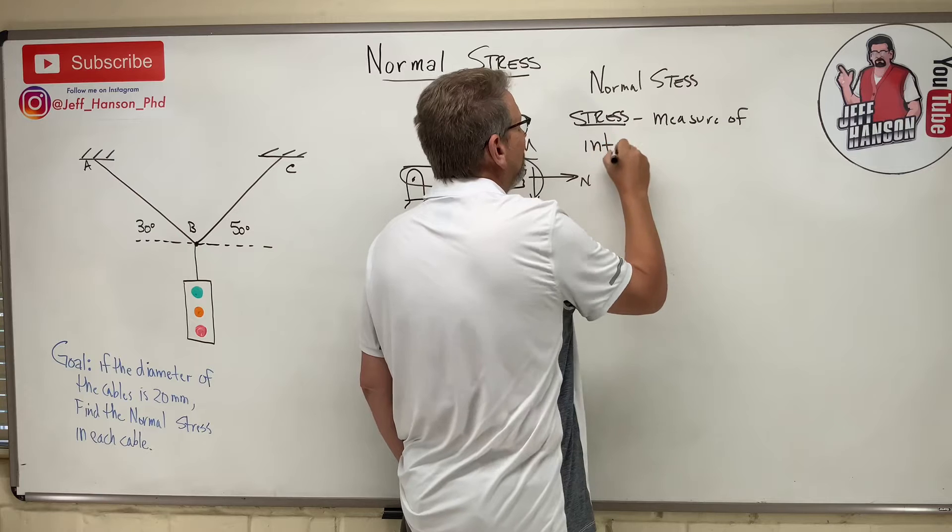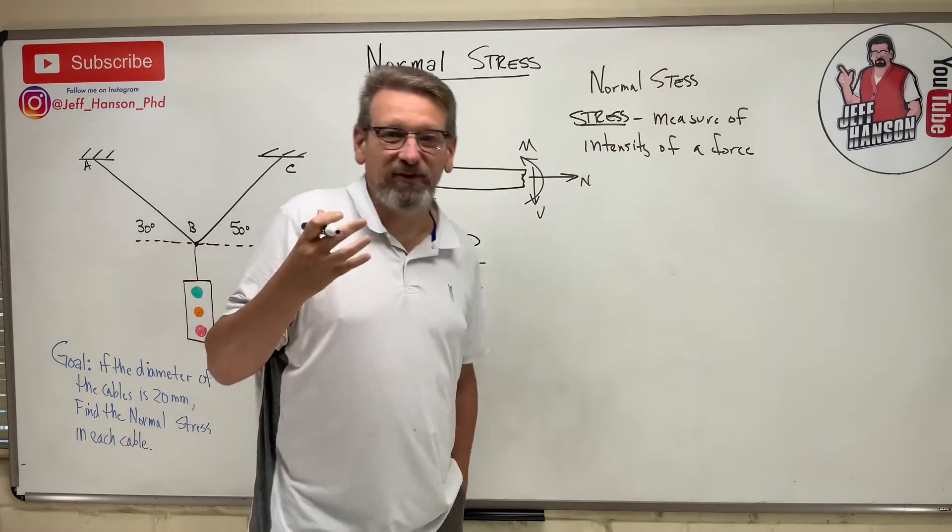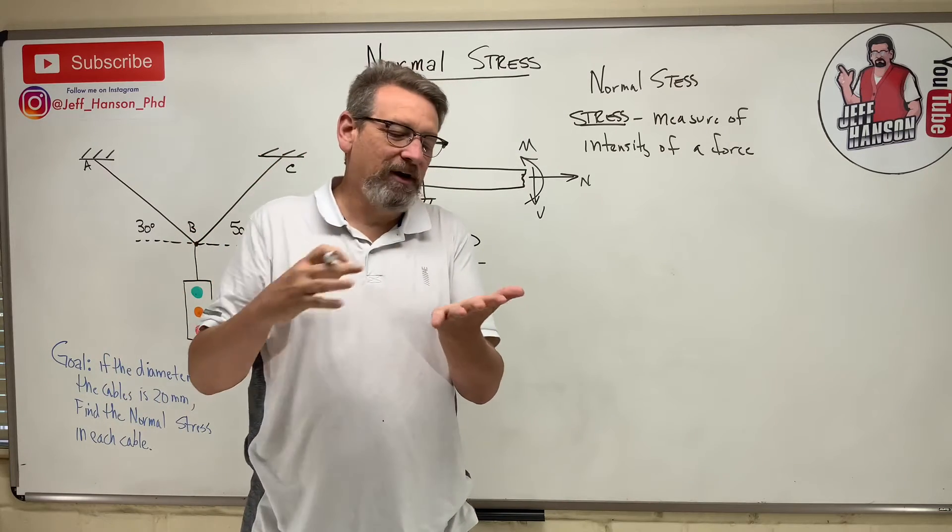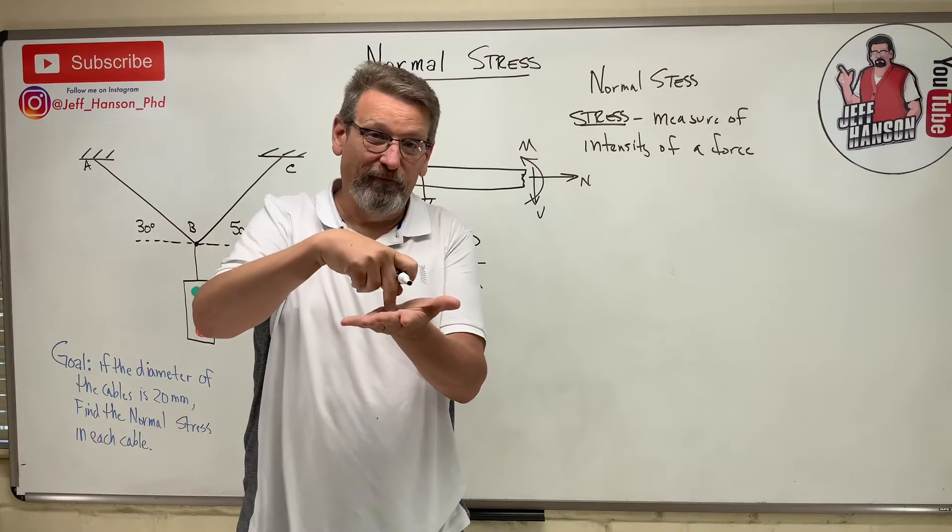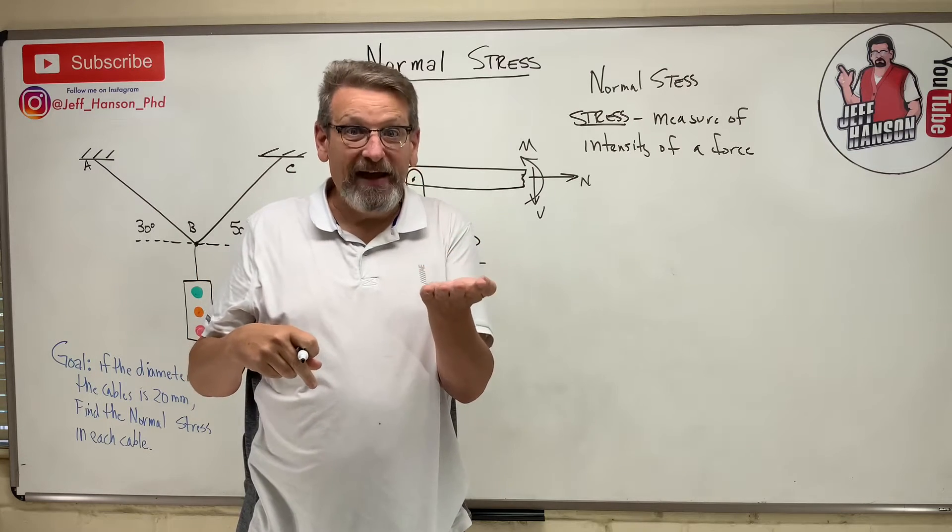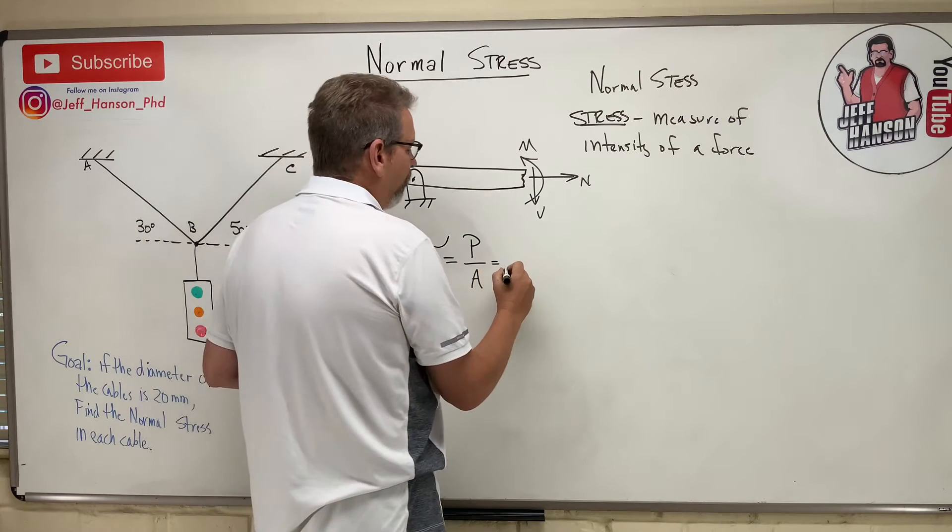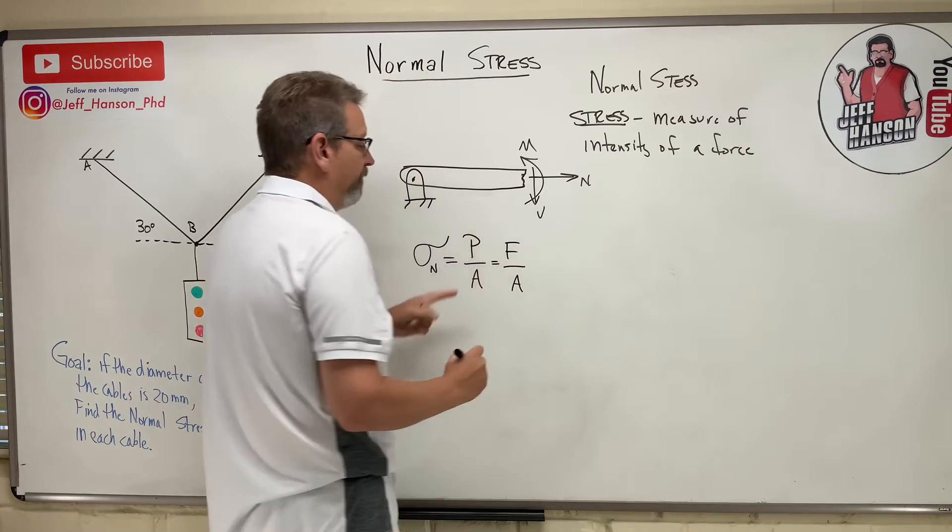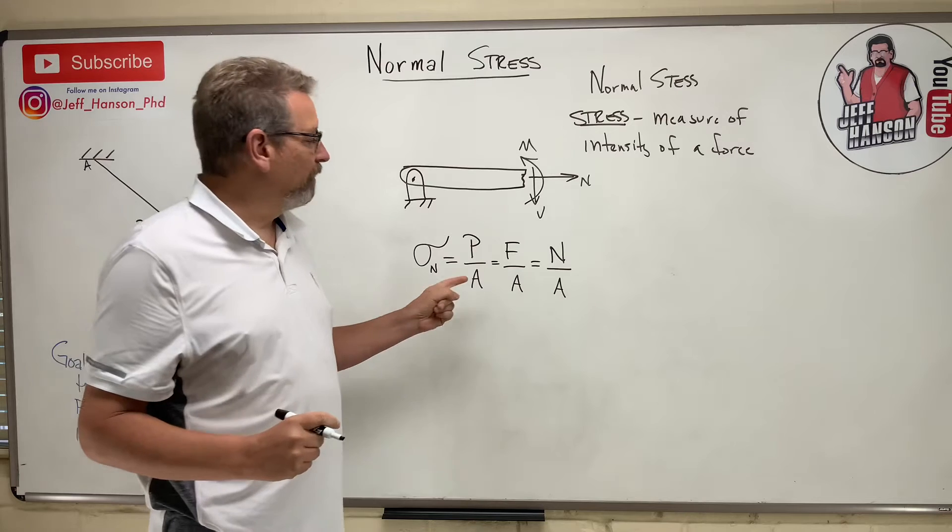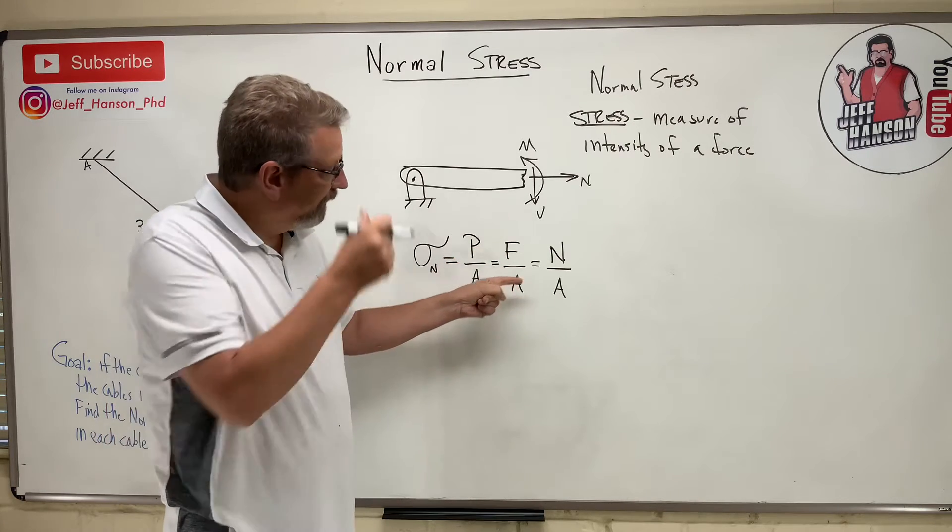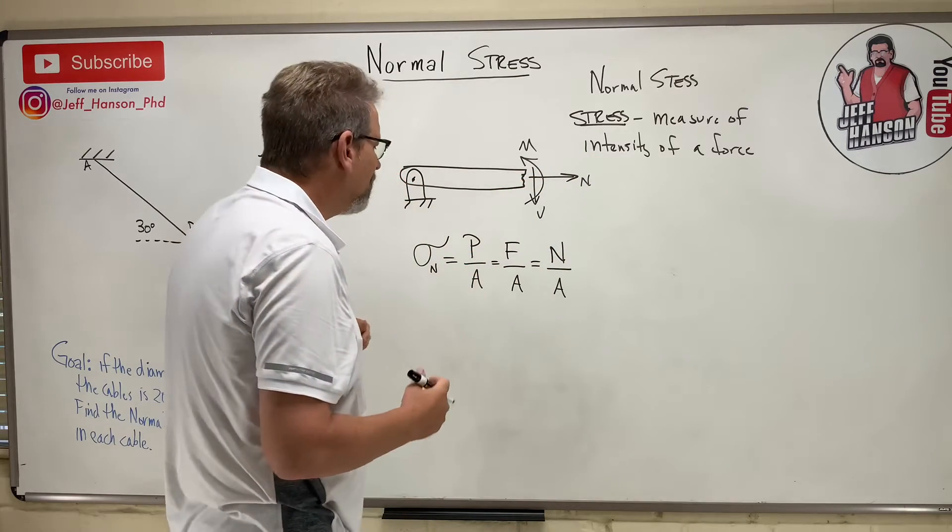So sigma is normal stress. What is stress? Stress is a measure of intensity of a force. We talked about this back in statics. If I step on your foot, big load but it's distributed over a big area, not very intense. But if somebody with stiletto high heels steps on you with even a little bit of weight, the pain is very intense. The force is very intense, it's over a very small area. So we get this equation P over A.